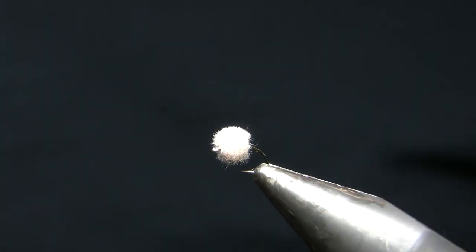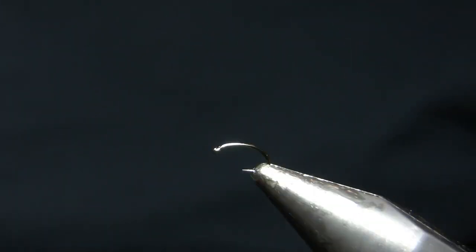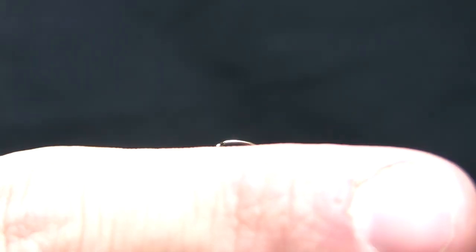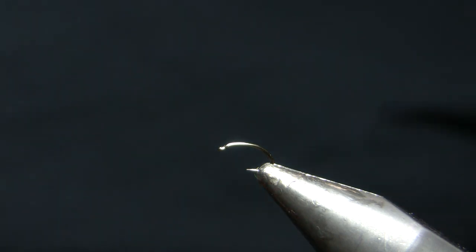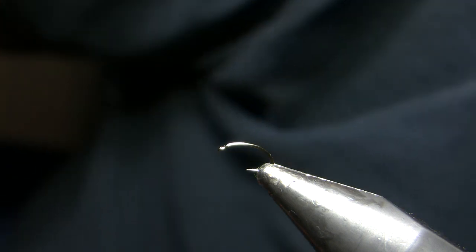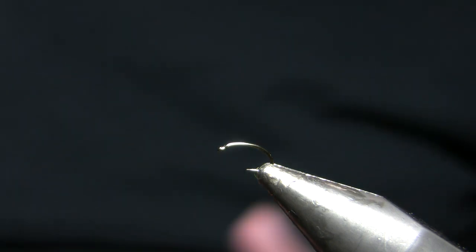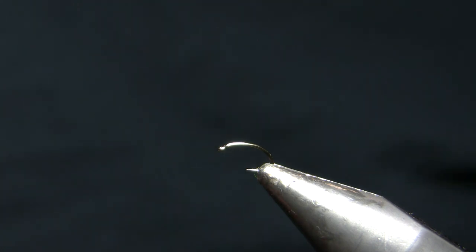The hook I have in the vise here is a size 18 scud hook—a little one. I like my eggs really, really small. I think too often they're tied way too large, and the fish just don't eat them. This is a trout-size egg; if you're fishing for steelhead, that's a little different.